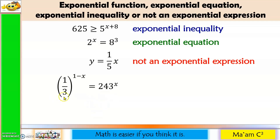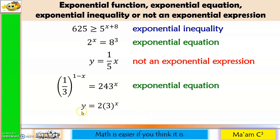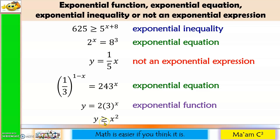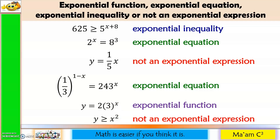Next one: I have here a constant raised to an exponent that contains a variable — exponential expression. This side is also a constant raised to a variable — another exponential expression. I have here a constant raised to an exponential expression. Next one: I have here y, equal sign, a constant, and a constant raised to a variable, so this portion is an exponential expression. Having y and an equal sign, therefore this is an exponential function. Last one: I have here y and an equality symbol, but my base is a variable, not a constant, and my exponent is a constant, not a variable — it's the other way around. Therefore, this is not an exponential expression.